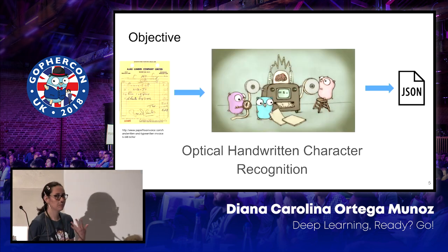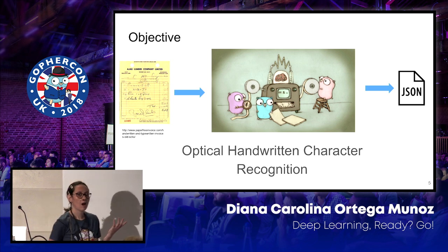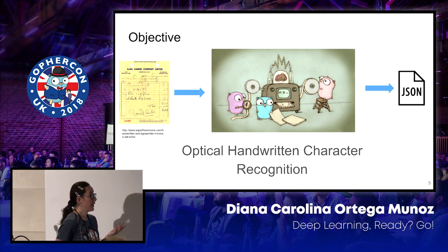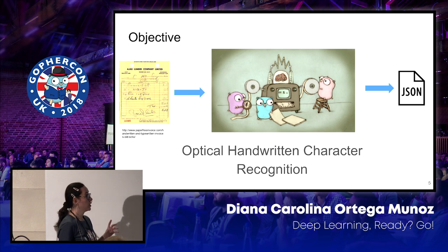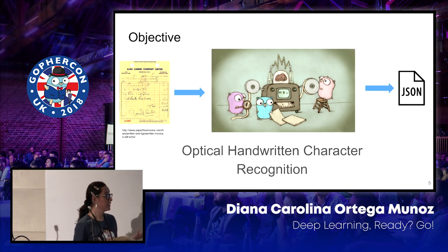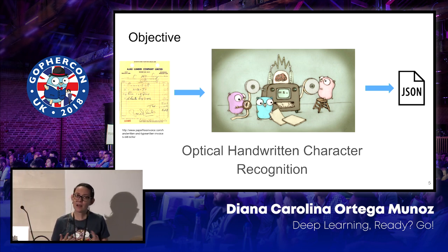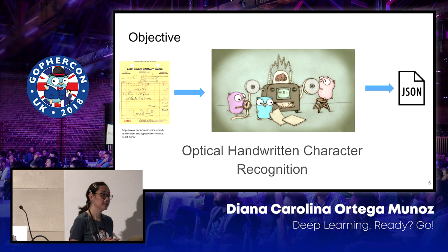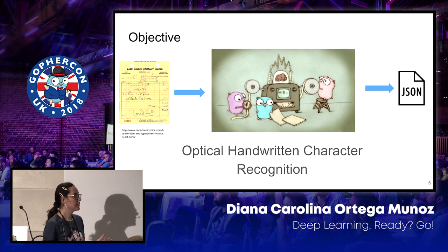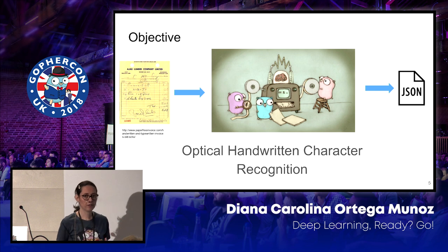The idea of the project that inspired this talk was: we have some pictures, some images of documents — documents completed by different users by hand. We have to process these documents, create an optical handwriting character recognition to take the text inside these images and save them inside a normal database. There are a lot of handwriting engines in the market, but we wanted something more specific to our context.